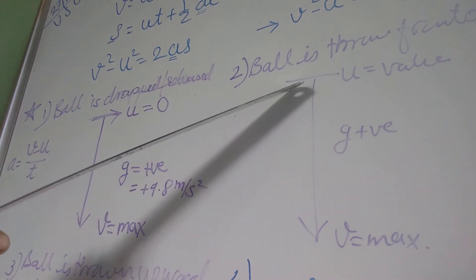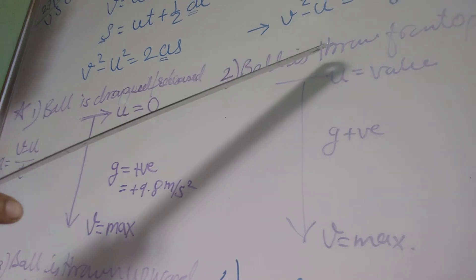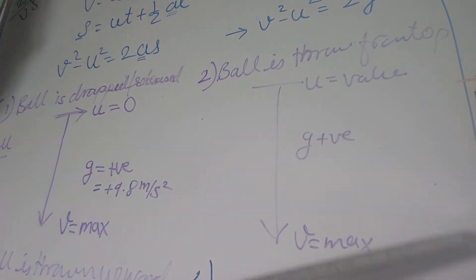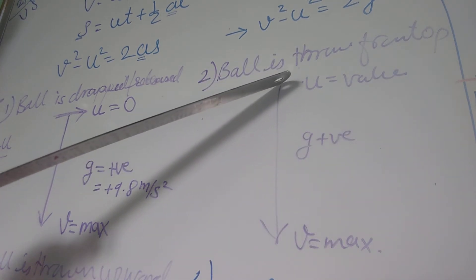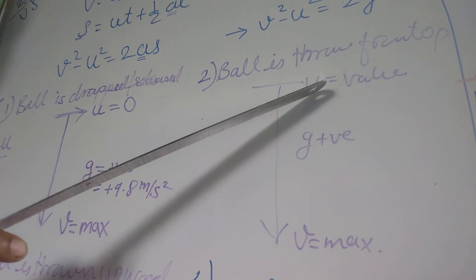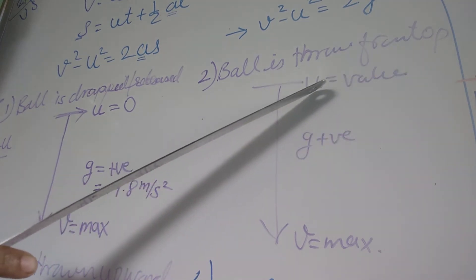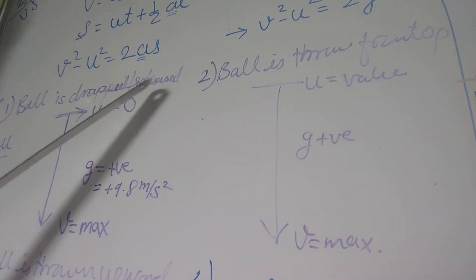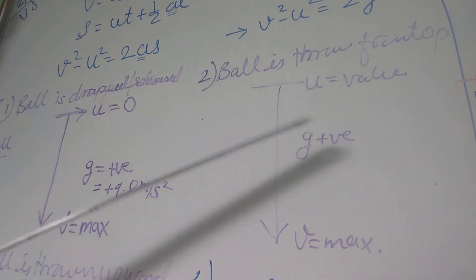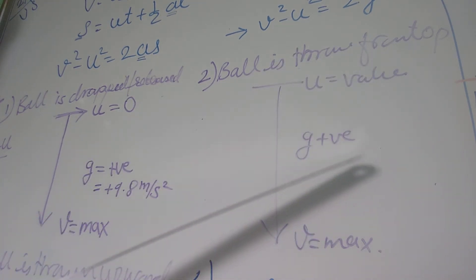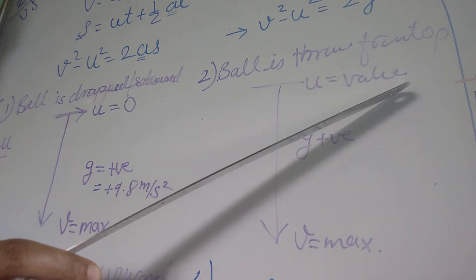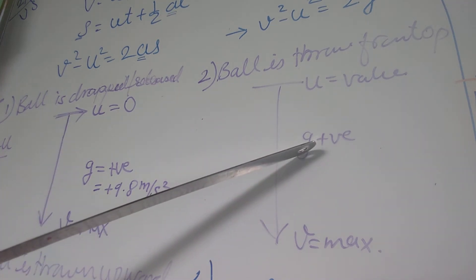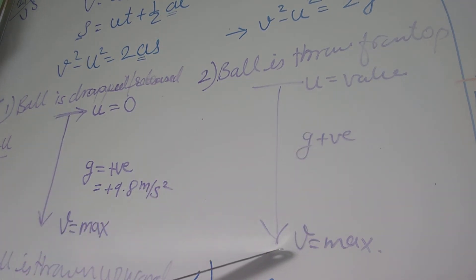The second example is that a ball is thrown from the top of a building or tower. When any object is thrown, some velocity is given to it, so u will not be zero — it will have some value. This is also a downward motion, similar to the first case. So here g will be positive and v will be maximum when it reaches the ground.